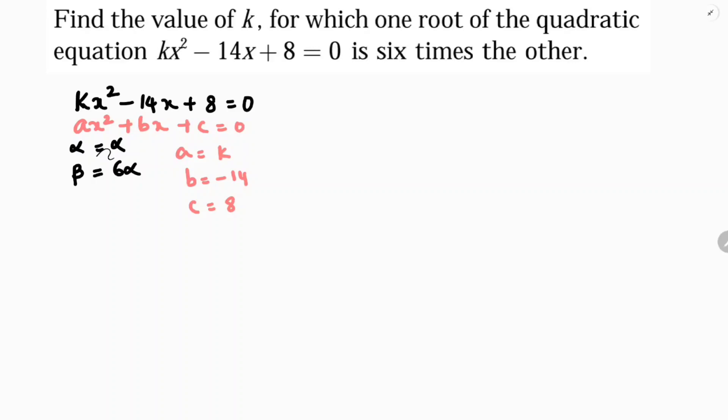One zero is 6 times the other. Now sum, if I calculate: alpha plus beta is -b/a.